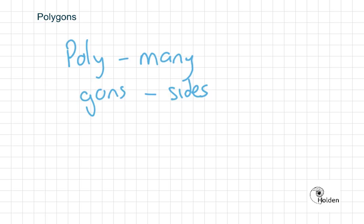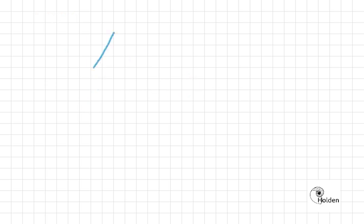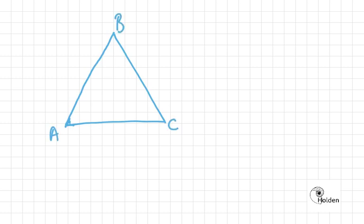We're going to start looking more at polygons. The most basic polygon is the three-sided polygon, which you will know as a triangle. Triangles come in many shapes and forms, and we're going to spend a little bit of time looking at angles within polygons and properties of triangles and other things.